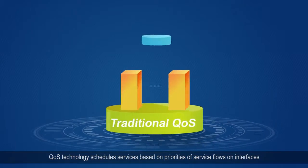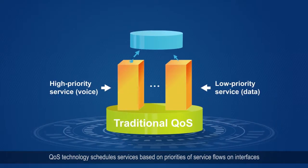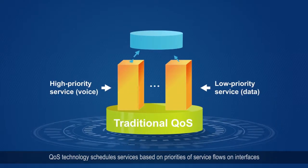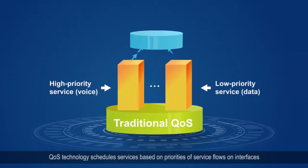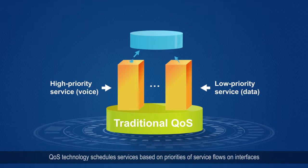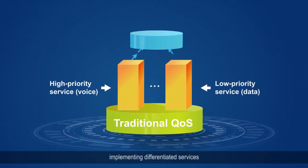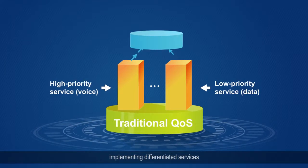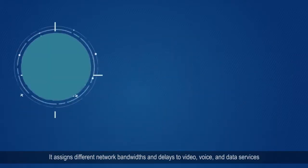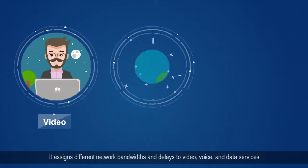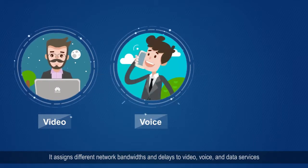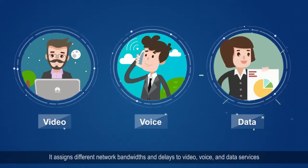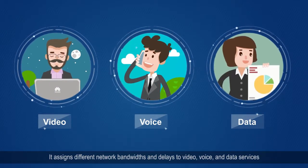QoS technology schedules services based on priorities of service flows on interfaces, implementing differentiated services. It assigns different network bandwidths and delays to video, voice, and data services.